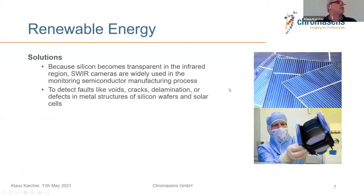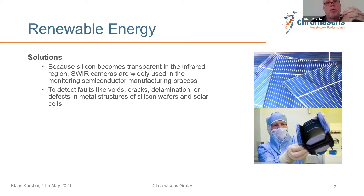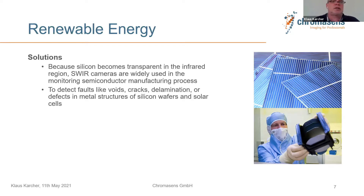The third topic is renewable energy and semiconductor inspection. One very important feature of silicon is that it becomes increasingly transparent in the infrared region, around 1000 nanometers. This gives the opportunity to look through semiconductor materials and see defects like cracks, voids, or delaminations, or to inspect metal structures inside the silicon. Solar cell inspection is also an important application for us.